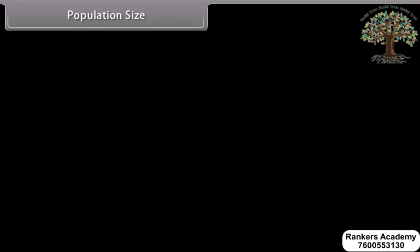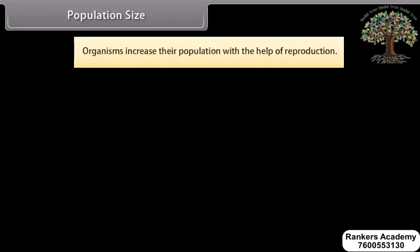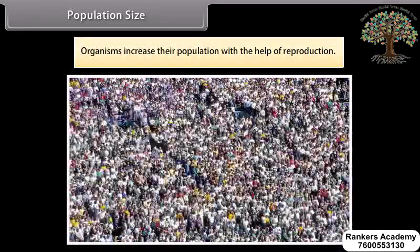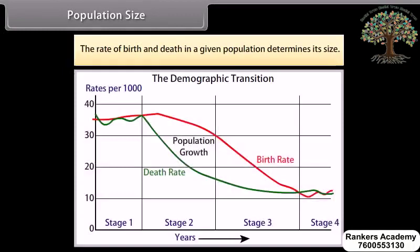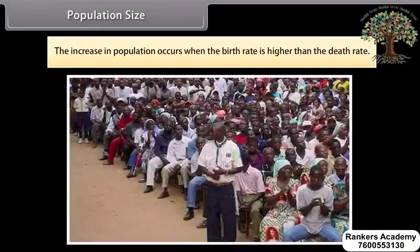Organisms increase their population with the help of reproduction. The rate of birth and death in a given population determines its size. The increase in population occurs when the birth rate is higher than the death rate.